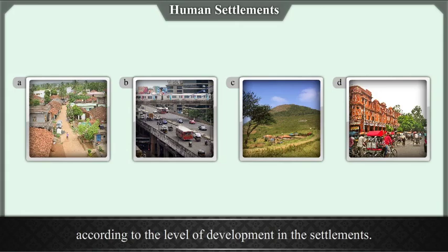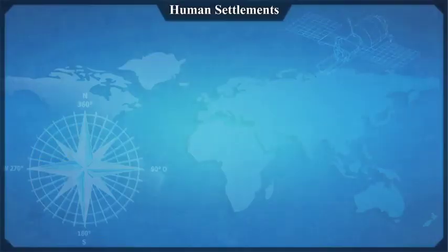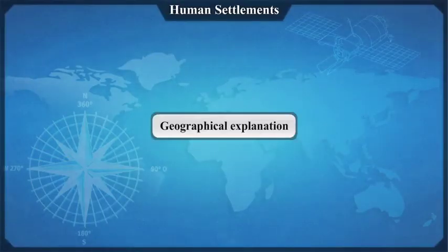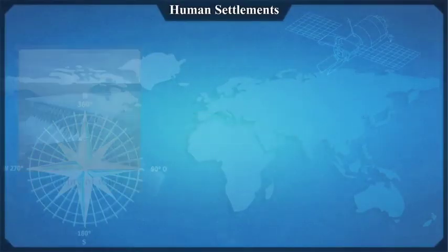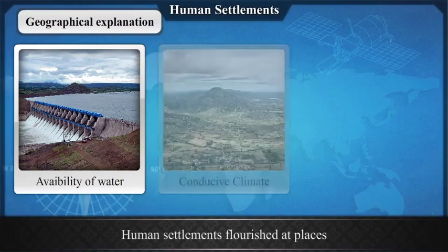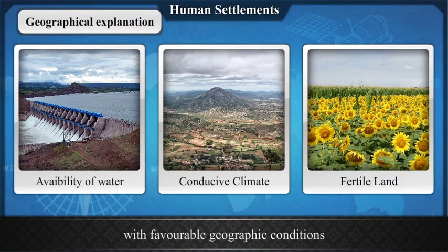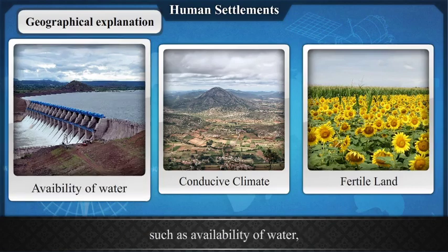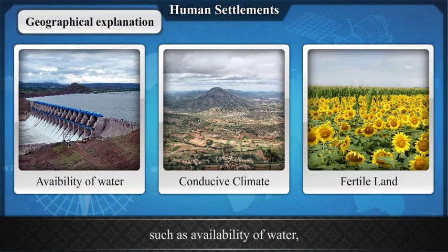Arrange the pictures according to the level of development in the settlements. Geographical explanation: Human settlements flourished at places with favorable geographic conditions such as availability of water, a conducive climate, and fertile land.